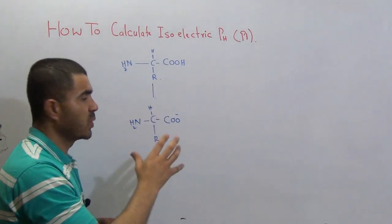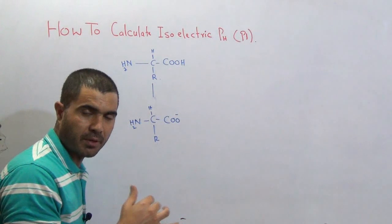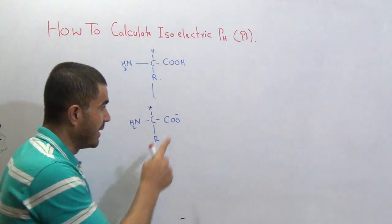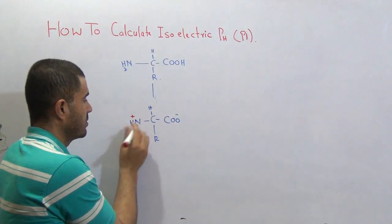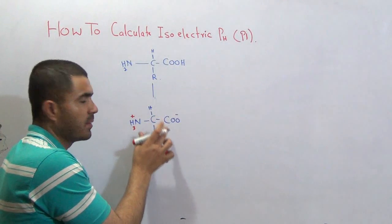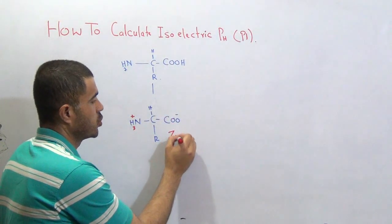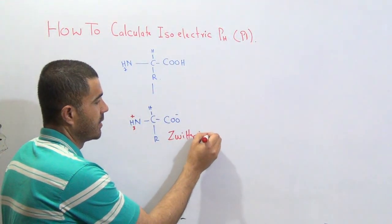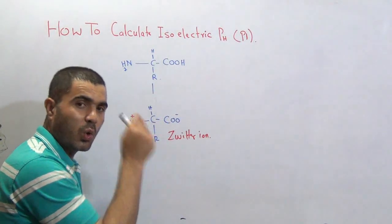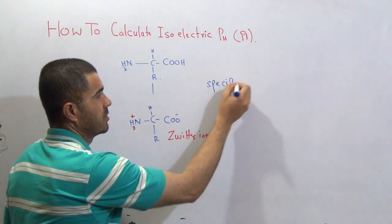We have already discussed in a previous video lecture how an amino acid gets a positive charge, negative charge, or both charges, under the topic of physical properties of amino acids. Once an amino acid gets both a negative and a positive charge — NH3 plus and COO minus — this condition of the amino acid is called a zwitterion.